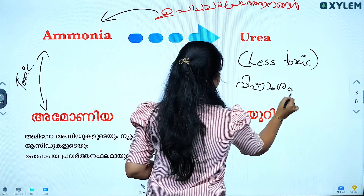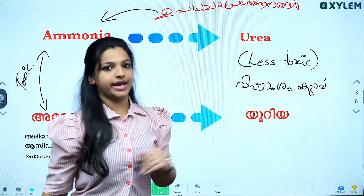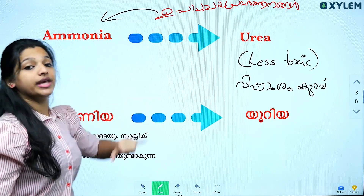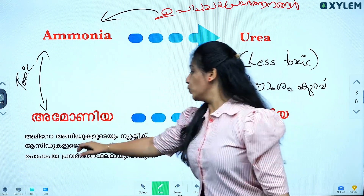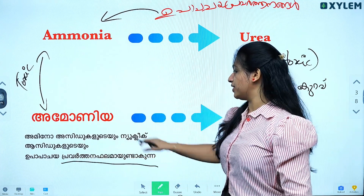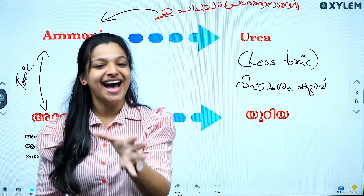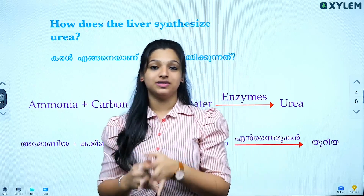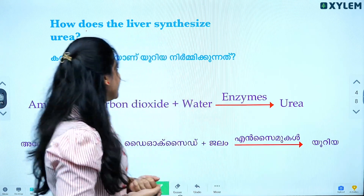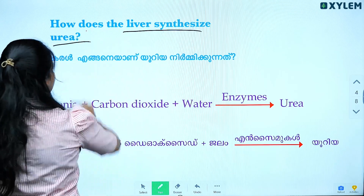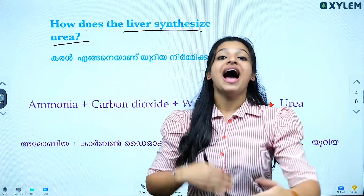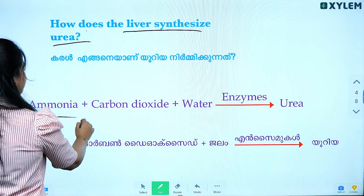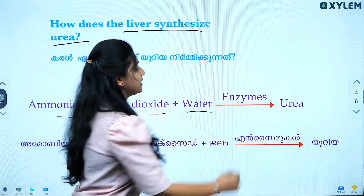We call the less toxic compound urea. The liver converts ammonia into urea. Ammonia is converted to urea in a process that takes place in the liver. The liver synthesizes urea. Ammonia plus carbon dioxide plus water, along with enzymes, forms urea.